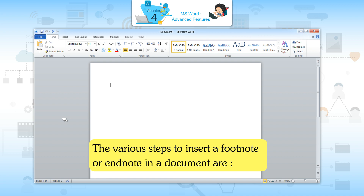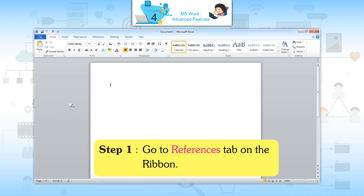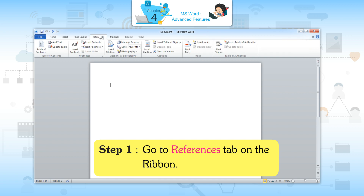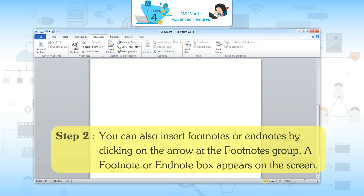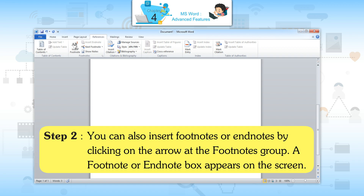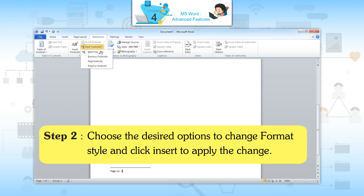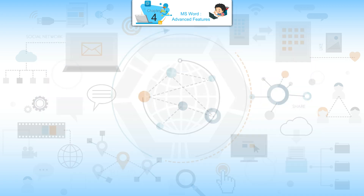The various steps to insert a footnote or endnote in your document are: Step 1 — go to the Reference tab on the ribbon. Step 2 — click on the Insert Footnote button of the Footnote group to type in the footnote. You can also insert footnotes or endnotes by clicking on the arrow of the Footnotes group. Step 3 — choose the desired option to change format style and click Insert to apply the change.